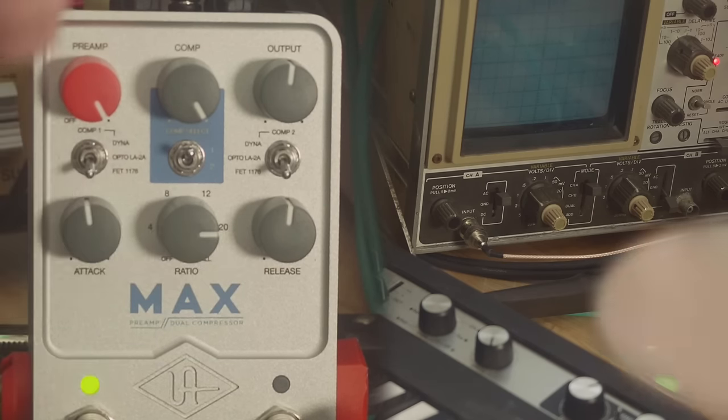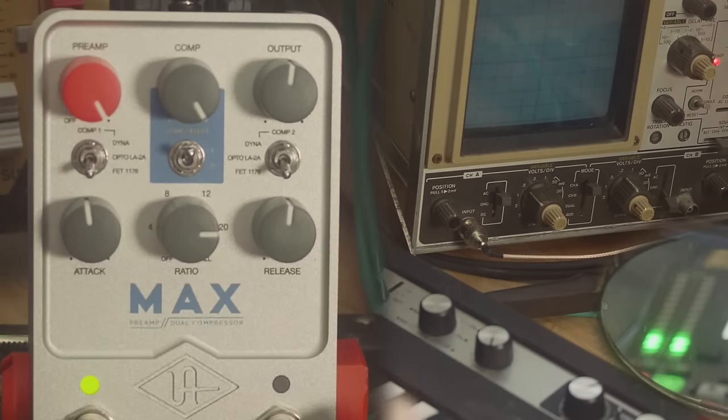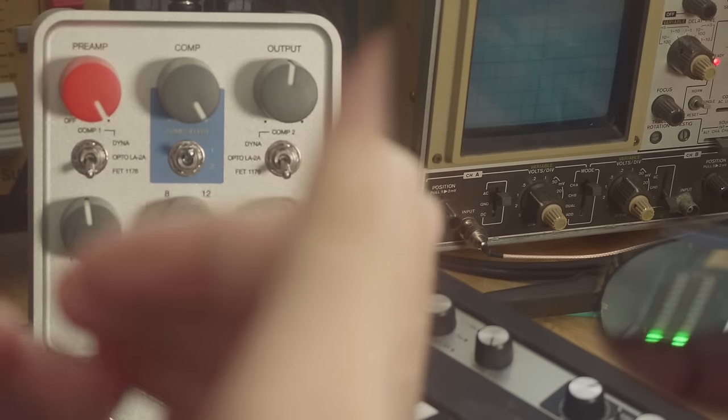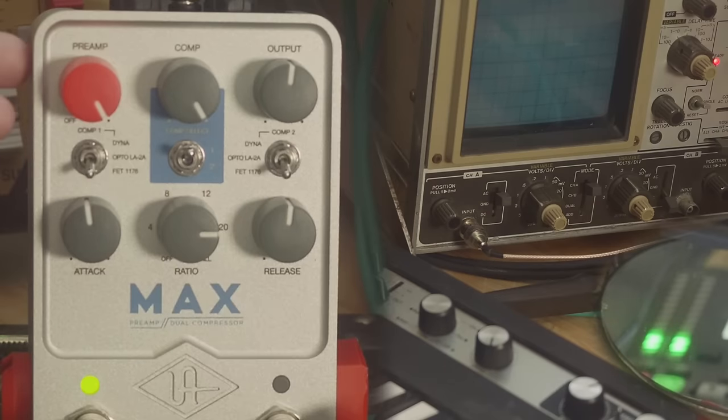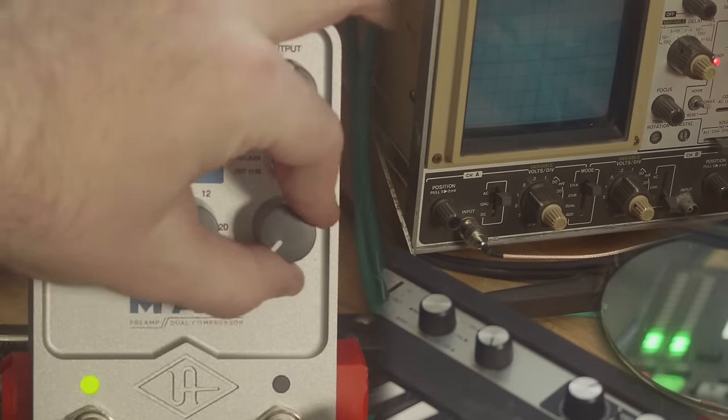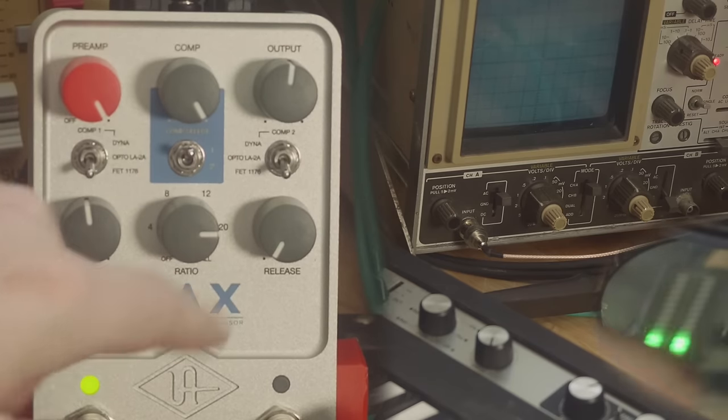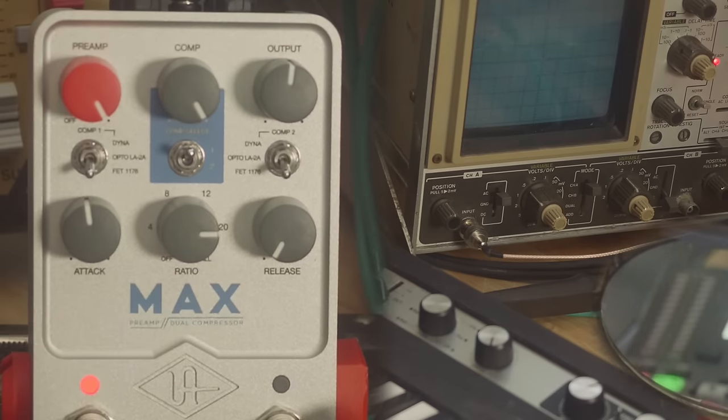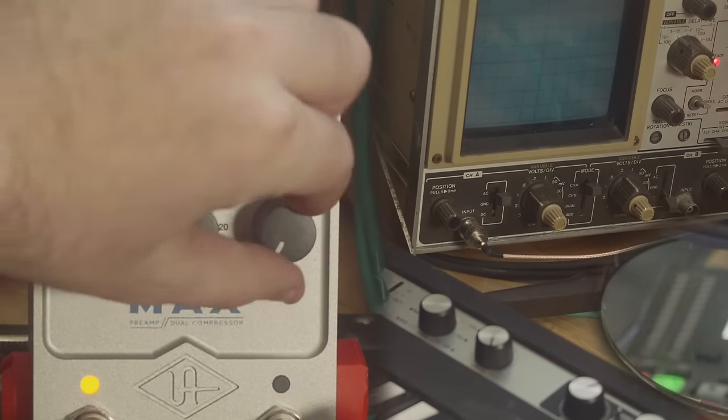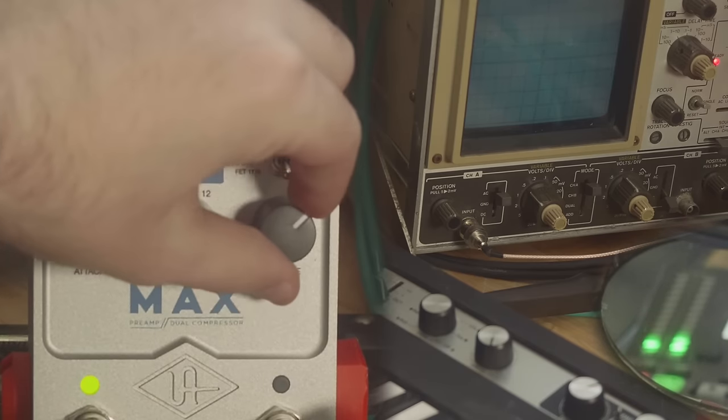What release control does is after we cross our threshold, how quickly do we change from our attenuated level back to the level of our input? A slower response, a longer release, is a low value. Listen to the noise again. Even if I let go right away, we're staying heavily compressed even after that signal is gone. We can hear that noise slowly coming up.